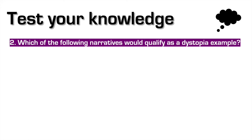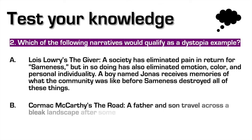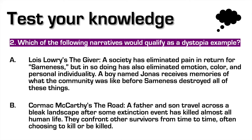Question 2: Which of the following narratives would qualify as a dystopia example? A: Lois Lowry's The Giver — a society has eliminated pain in return for sameness, but in so doing has also eliminated emotion, color, and personal individuality; a boy named Jonas receives memories of what the community was like before sameness destroyed all these things. B: Cormac McCarthy's The Road — a father and son travel across a bleak landscape after some extinction event has killed almost all human life, and they confront other survivors, often choosing to kill or be killed. A is the right answer — The Giver is an example of a dystopian narrative.